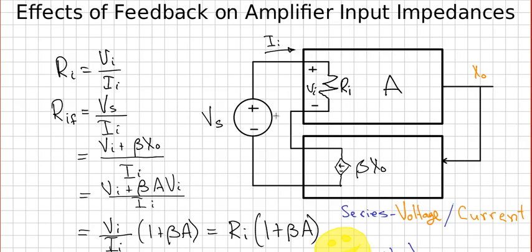Let's look at the effect of feedback on amplifier input impedances. Before we begin this derivation, I should mention that this is really only approximately exactly what happens because we're making assumptions of an ideal feedback network.